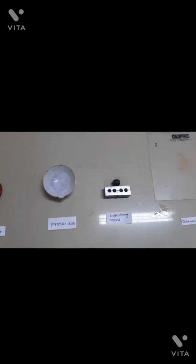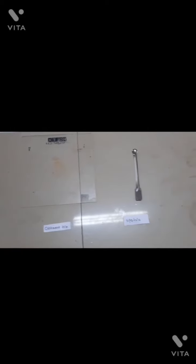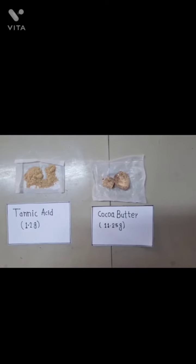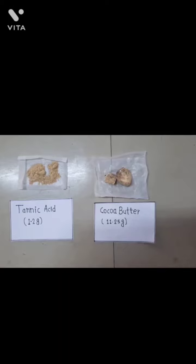Here are requirements. We require gas burner, porcelain dish, mold, oilman type and spatula. Our chemicals are tannic acid 1.2 gram and cocoa butter is 11.25 gram.